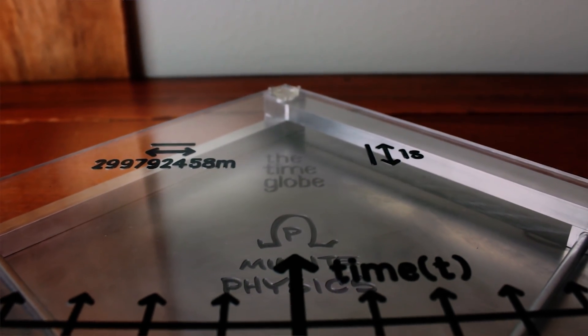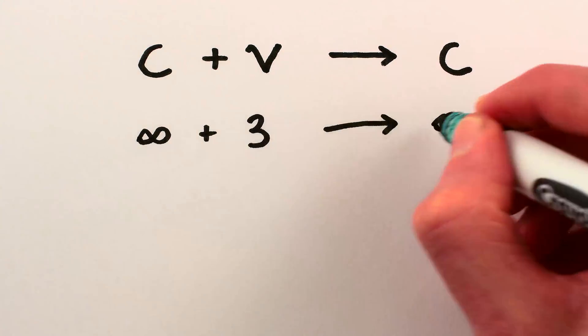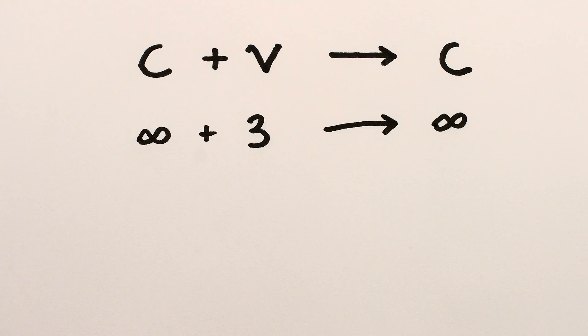So light speed plus your speed equals light speed. It's almost more like what happens when you add something to infinity than adding together two finite numbers.